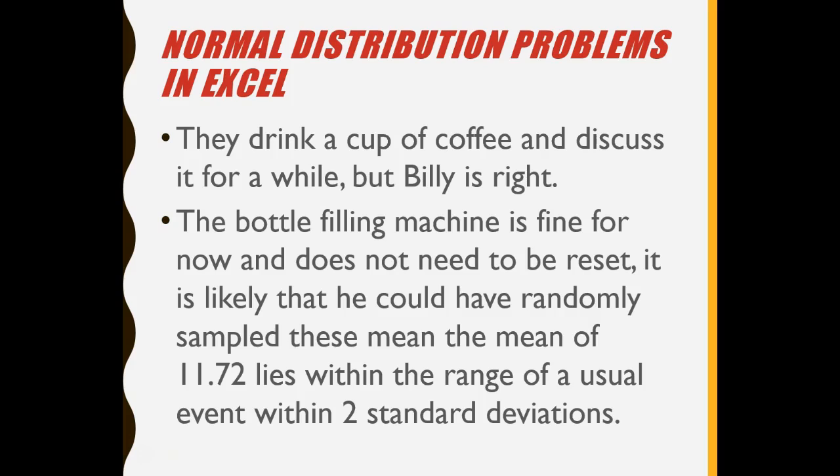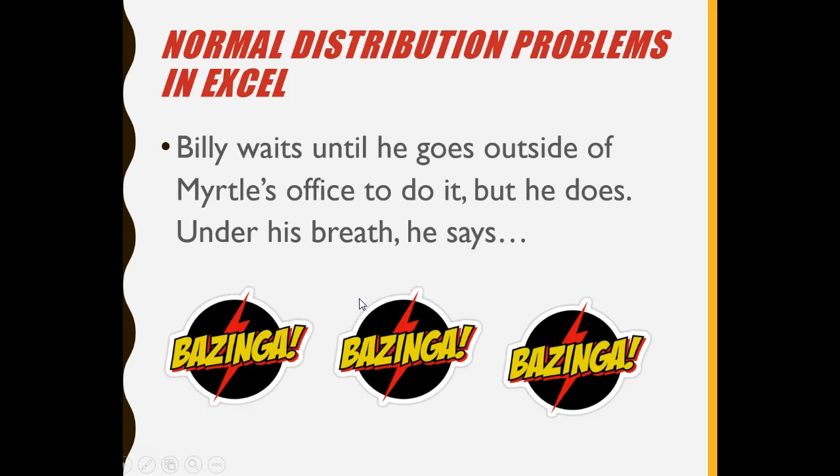Billy and Myrtle drank a cup of coffee and they talk about things like, well, some of those might have been below or some of those might have been above, but the bottling machine statistically is fine for right now and doesn't need to be reset. It is likely that he could have randomly sampled these getting a mean of 11.72 because it does lie between plus or minus 2 standard deviations. Billy doesn't worry about that. He just goes outside. He waits till he goes outside Myrtle's office, but under his breath, he says, bazinga, bazinga, bazinga. He's probably looking for a raise. I thought these two problems might help you out. Hope they did. Take care now.